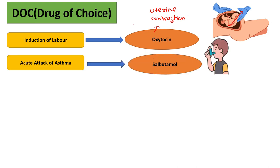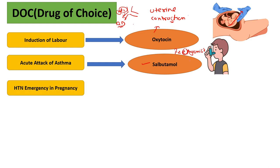For the acute attack of asthma, the drug of choice is salbutamol. Salbutamol is a short-acting beta-2 receptor agonist. Beta-2 receptors are present on our bronchus; when we stimulate these beta-2 receptors, they cause bronchodilation. That is why we use salbutamol in the acute attack of asthma.